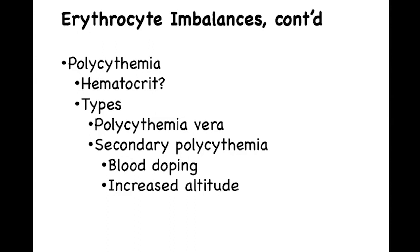Another cause for secondary polycythemia is increased altitude. As you go up in altitude, the amount of oxygen in the air decreases. Due to this, you will have a hypoxic condition, and the kidneys will release EPO. This will increase erythropoiesis, increasing red blood cell count, in order to try to maintain oxygen levels within the normal range in the blood.